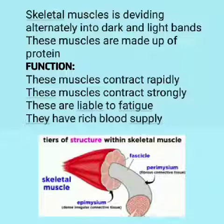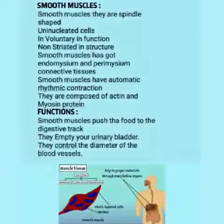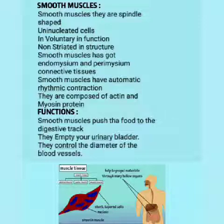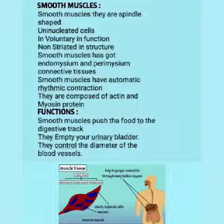Now we will discuss the second type — smooth muscles. Smooth muscles are also called unstriated muscles. They form the wall of the gut, urinary bladder, and blood vessels. Smooth muscles are structurally very simple muscles. You can see the pictures of the smooth muscles. Characteristics and features: they are spindle-shaped, uninucleated cells, involuntary in function, and non-striated in structure.